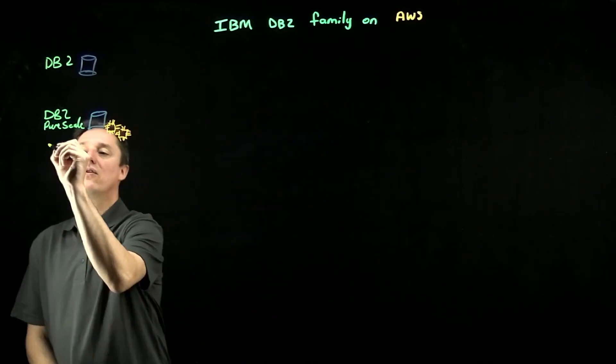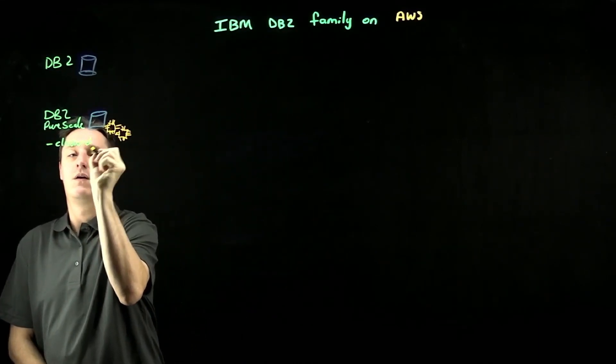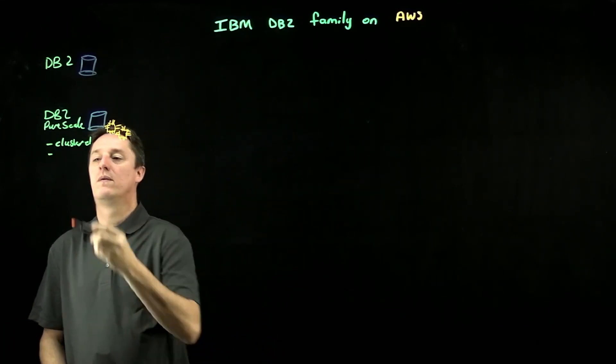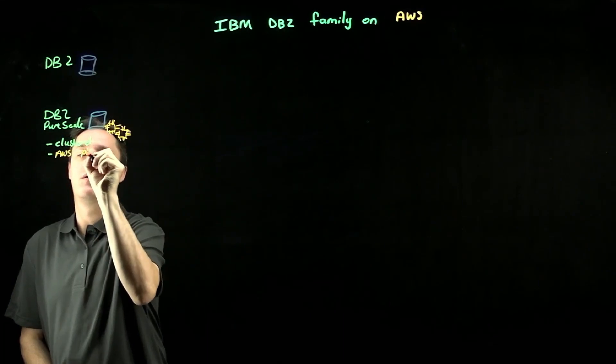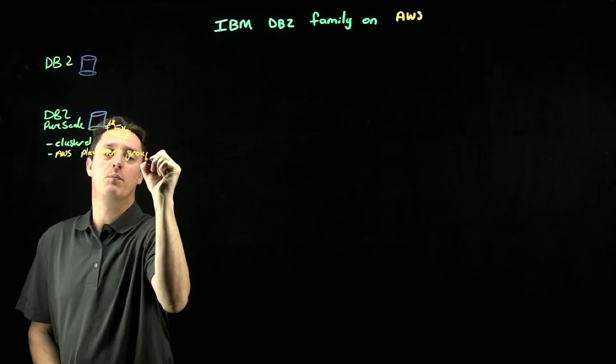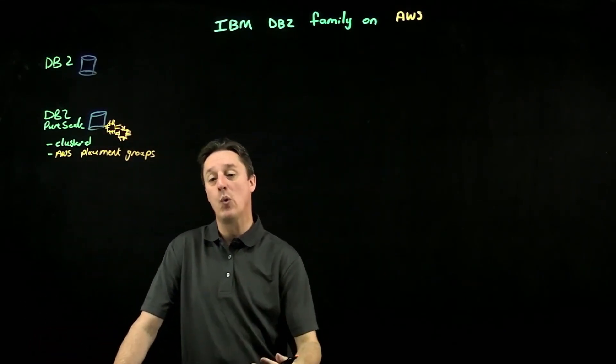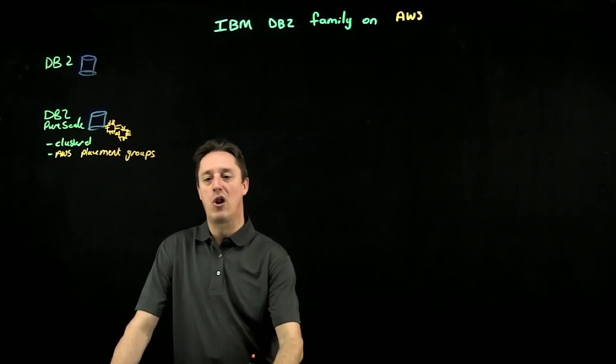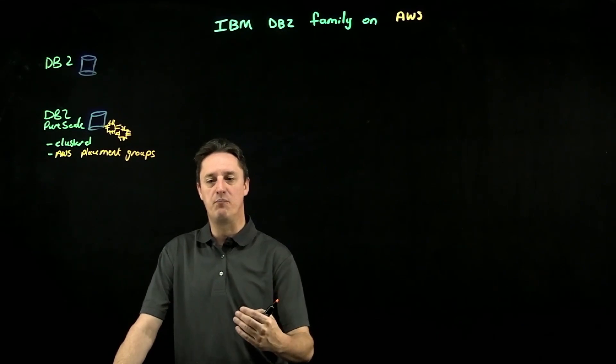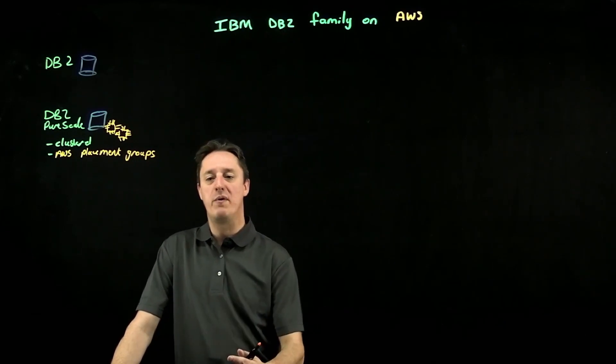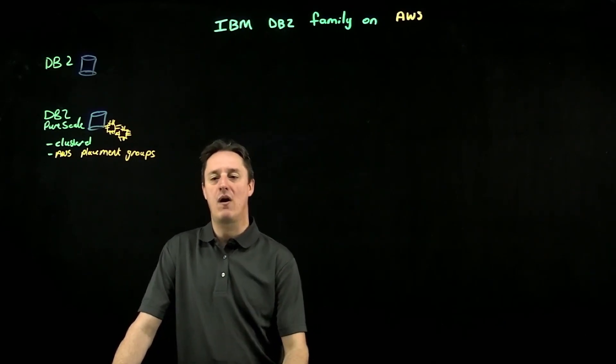It is a clustered solution, and when we deploy it, we build it out into AWS Placement Groups. Placement Groups is simply a construct that says when I deploy EC2 instances, I provision those EC2 instances physically as close to each other as I can. They'll sit in the exact same availability zone, exist in the same AWS data center. Very commonly, if they're deployed at the exact same time, they will exist on the same physical AWS rack.